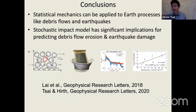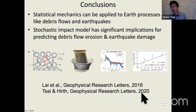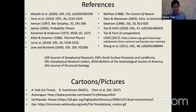In summary, I've talked about how statistical mechanics can be applied to earth processes like debris flows and earthquakes, and the stochastic impact model has significant implications for both debris flow erosion and earthquake damage. For further reading, I'd point to a 2018 paper by Lye et al. on debris flows and the model discussed today, and a 2020 paper by myself and Greg Hearth on the earthquake application. With that, I'll open it up for questions.